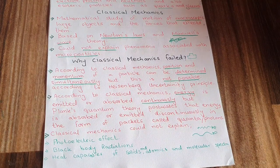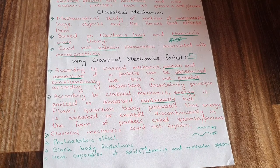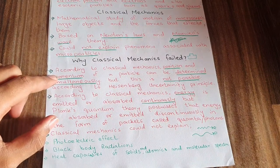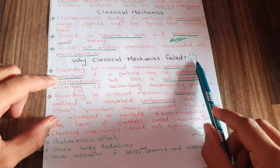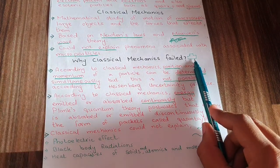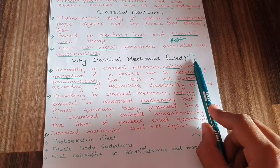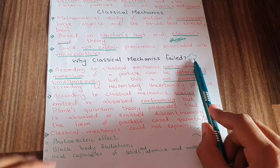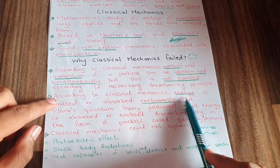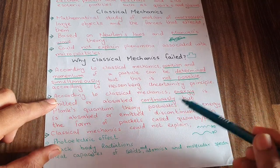The position and momentum of a moving subatomic particle cannot be found simultaneously. In contrast, classical mechanics states that position and momentum can be found simultaneously — as shown with the car example, where you can tell both the position and velocity at the same instant.